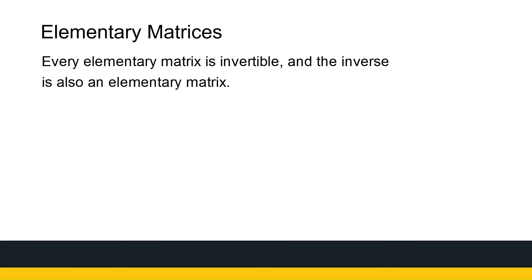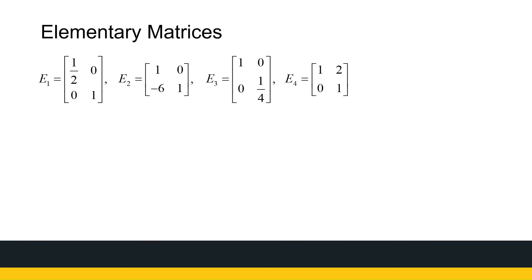Every elementary matrix is invertible, and the inverse is also an elementary matrix. If I've got an elementary matrix I can find the inverse. For E1, I found it by taking row one of the identity and multiplying it by a half. So to get the inverse of E1, we do the opposite: take the identity and multiply the first row by two. That is the inverse of E1.